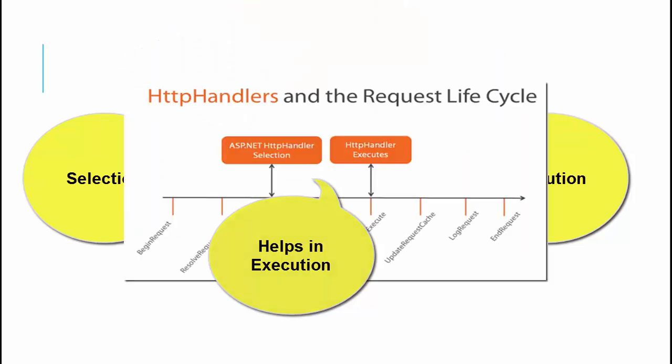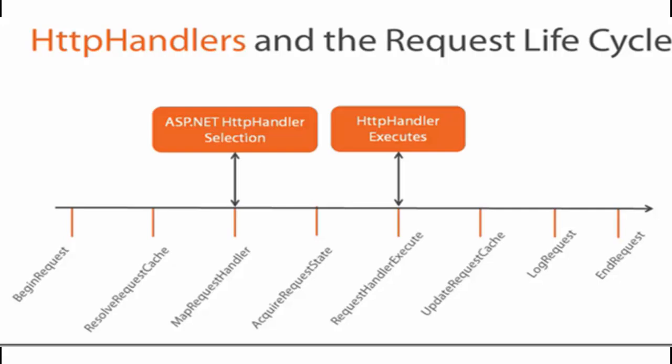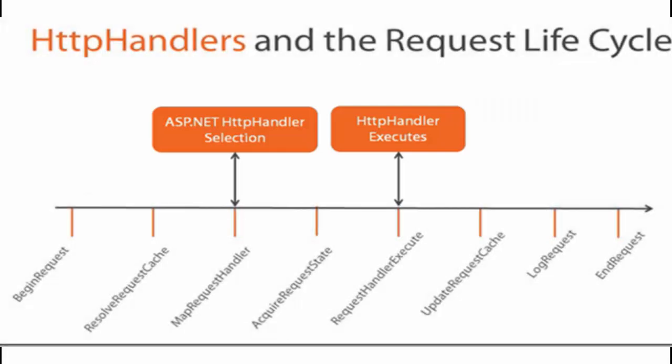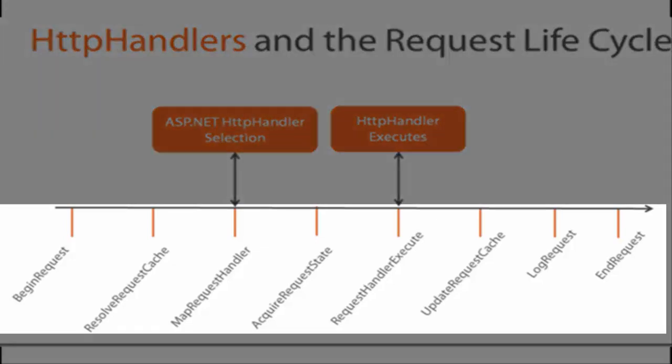As you can see from this diagram of the HTTP handlers and the request lifecycle, there are two phases: first is the ASP.NET HTTP handler selection, and then we have HTTP handler execution. There are eight events that happen between the HTTP handler selection and execution. These are: first, BeginRequest; second, ResolveRequestCache; third, MapRequestHandler; fourth, AcquireRequestState; fifth, RequestHandlerExecute; sixth, UpdateRequestCache; seventh, LogRequest; and eighth but not least, EndRequest.